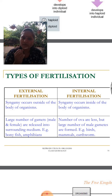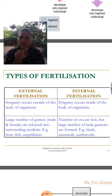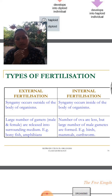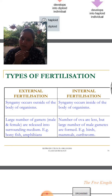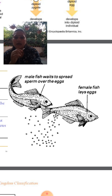In external fertilization, both male and female gametes are released into the surrounding medium such as water. For example, frog and fish release their gametes into water and fertilization takes place there. To compensate for the loss, a large number of gametes are released. In internal fertilization, found in birds and mammals, the number of ova is less but the number of male gametes is large.